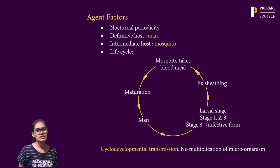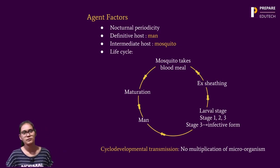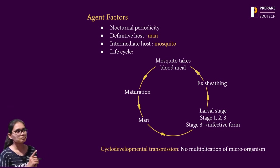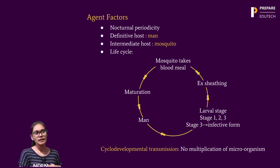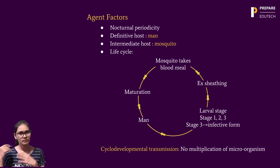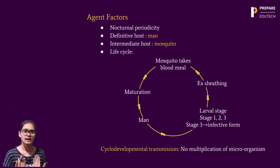The definitive host is man, and the intermediate host is the mosquito. Regarding the life cycle of Wuchereria bancrofti: the mosquito, mainly Culex, takes a blood meal from an infected person. During this, microfilariae are ingested and undergo a process called egg sheathing, changing to the larval stage.